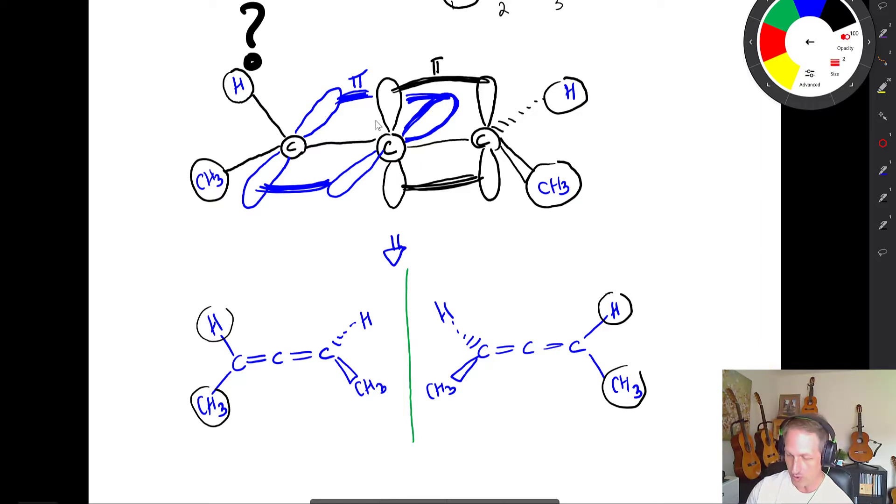So it turns out that no matter what we do, these two mirror images are non-superimposable, which makes them enantiomers.